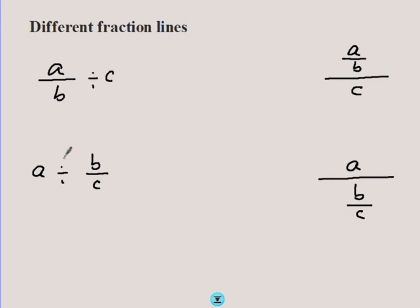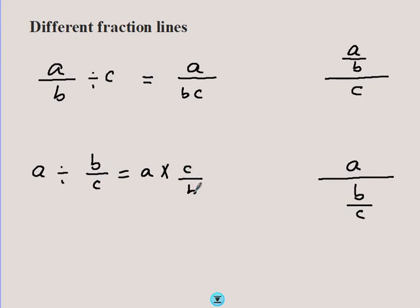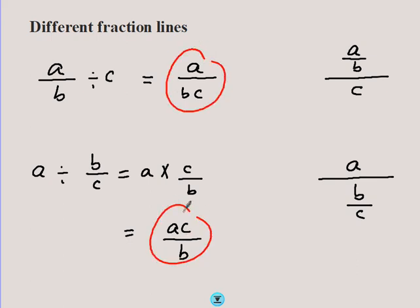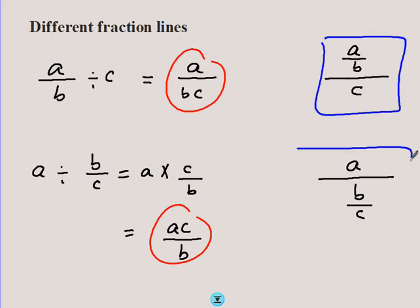When evaluating a/(b/c), we are dividing a fraction by something, so we multiply a by the reciprocal of (b/c), which is c/b, giving ac/b. Comparing the two: (a/b) ÷ c gives a/(bc), while a/(b/c) gives ac/b — these are definitely not the same, even though the notation may look similar. Please pay attention to how you write fractions and try to use the clearer forms.